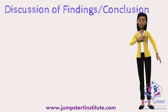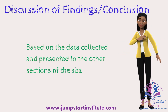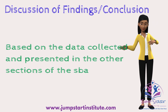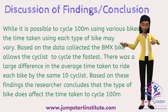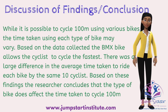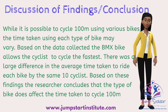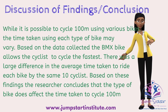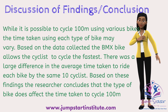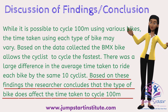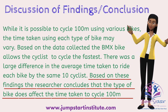Now let's look at discussion of findings and conclusion. This section has to be based on the data you collected and presented in the other sections of the SBA — whatever you discuss here must be connected with the other sections. For example, you can say: while it is possible to cycle 100 meters using various bikes, the time taken using each type of bike may vary. Based on the data collected, the BMX bike allows cyclists to cycle the fastest. There was a large difference in the average time taken to ride each bike by the same 10 cyclists. Based on these findings, the researcher concludes that the type of bike does affect the time taken to cycle 100 meters. Notice that the final statement answers the objective of the SBA — to determine whether or not the type of bike used affects the time taken to ride over 100 meters.